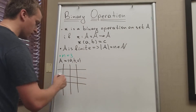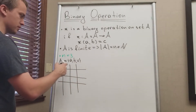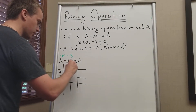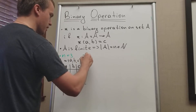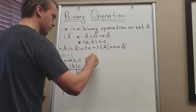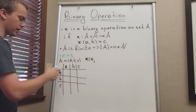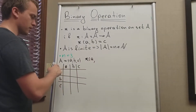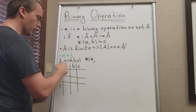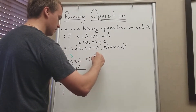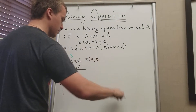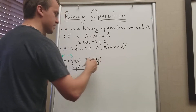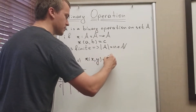In this table, this column is going to have the elements a, b, c, and this row is also a, b, c elements. When we define this, my column element is going to be my first element in the binary operation and my row element is going to be my second. Let's use x and y — x is my first element and y is my second element in the binary operation — and I'm going to map this pair to some element z.